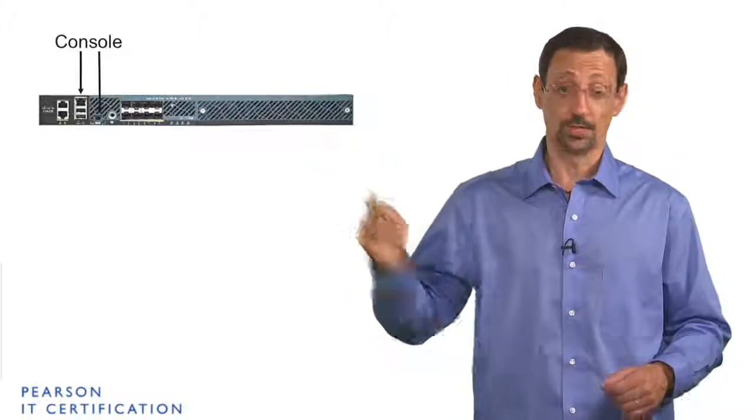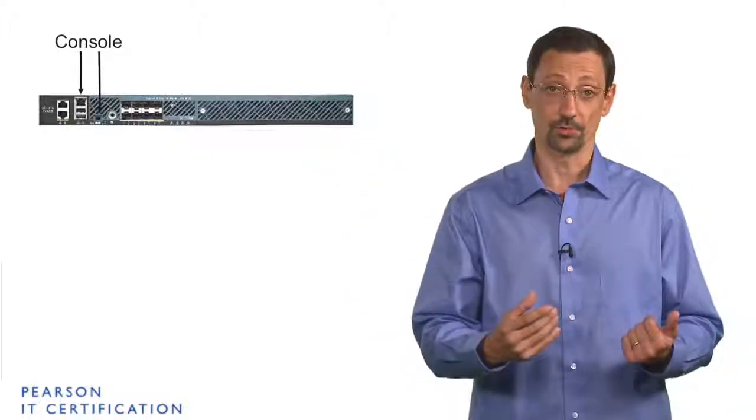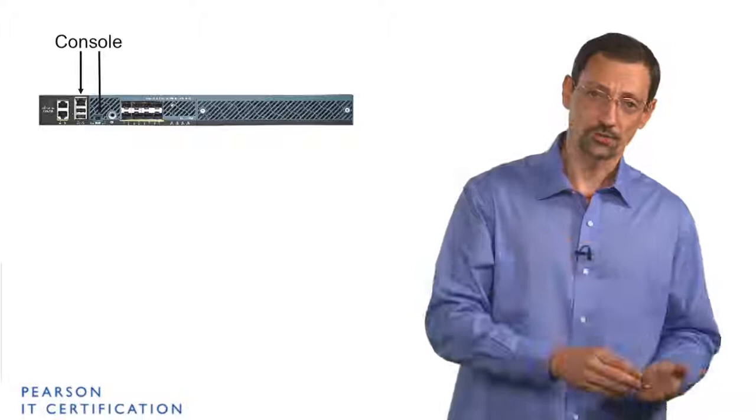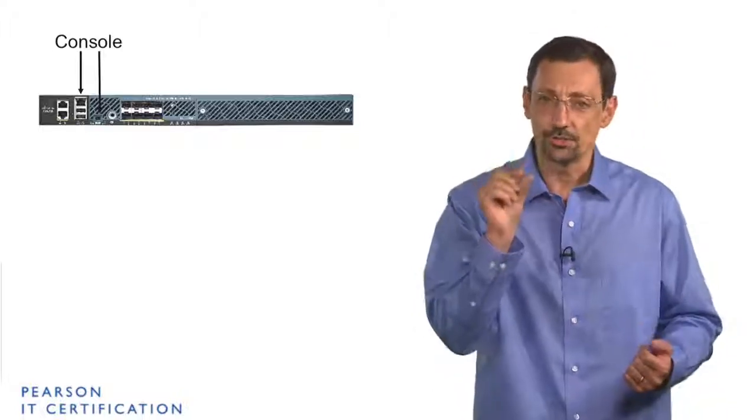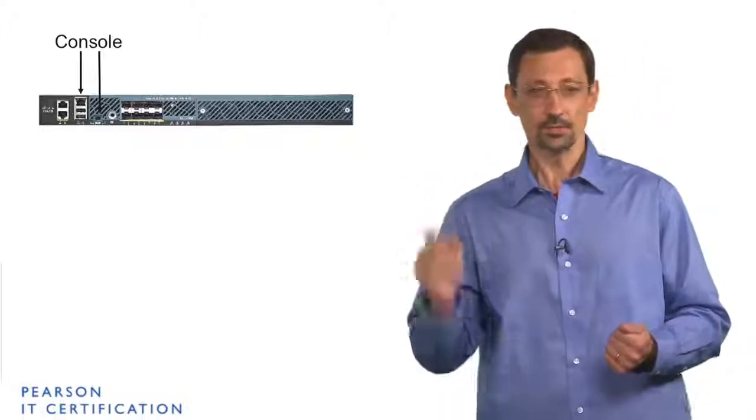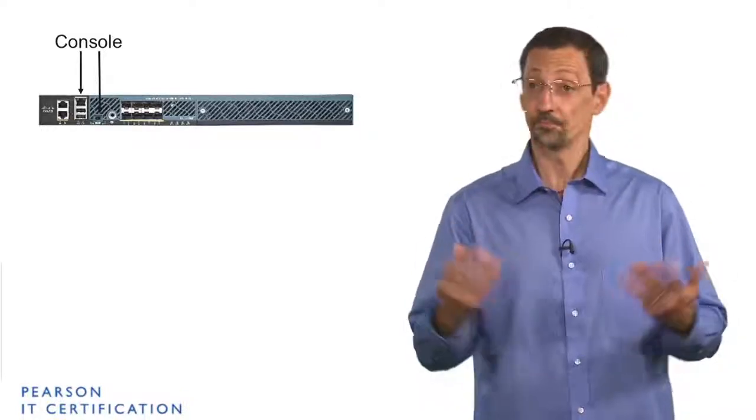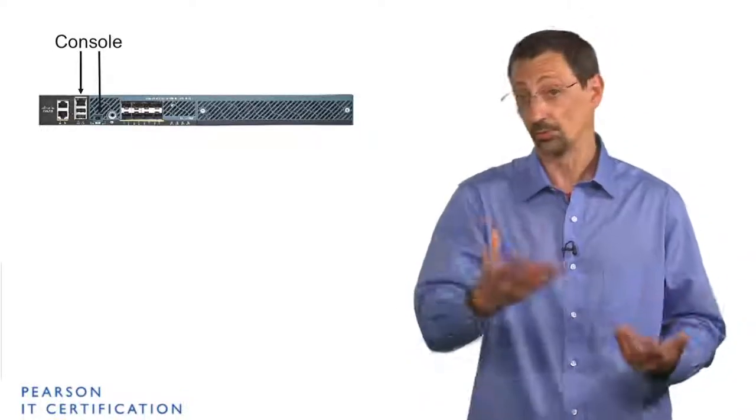The first one is the console. This is where you have the CLI connection. In the autonomous access points, it's typically an RJ45 connection. In this solution, you have actually two possibilities. One of them is the RJ45 that you find also on switches.